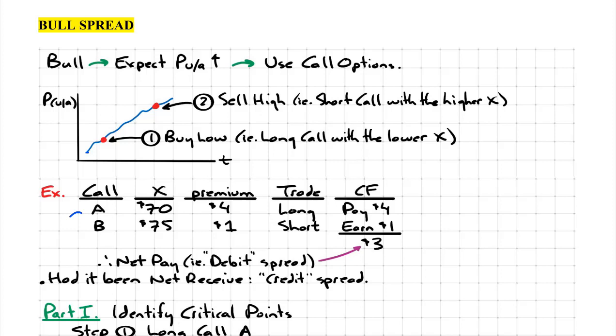Bull spread. The term bull implies that the investor expects the price of the underlying asset to appreciate. The standard practice with a bull spread is to use call options in order to execute that strategy.